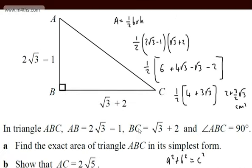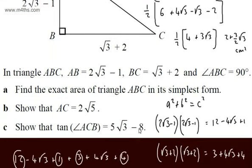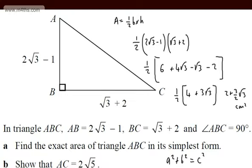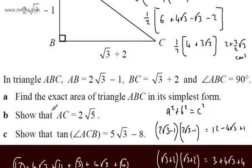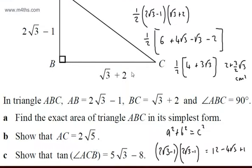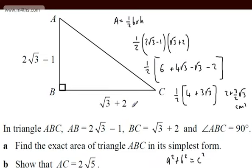Now we need to show that tan of angle ACB equals 5 root 3 minus 8. This is the angle at C. Let's call it theta. Tan of the angle is opposite over adjacent. The opposite is AB = 2 root 3 minus 1, and the adjacent is BC = root 3 plus 2. So tan(ACB) equals (2 root 3 minus 1) over (root 3 plus 2).